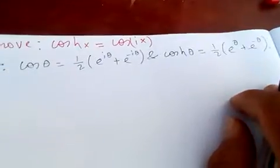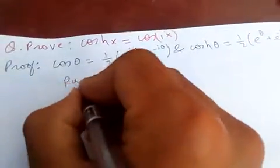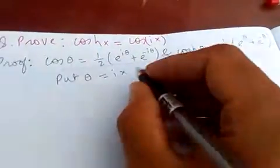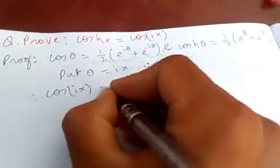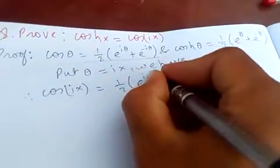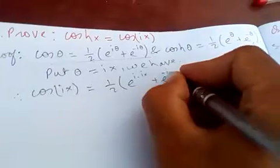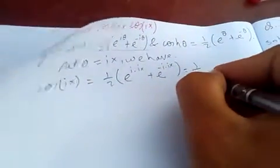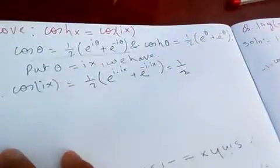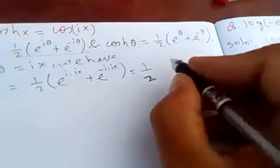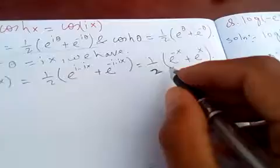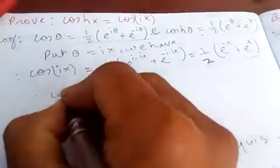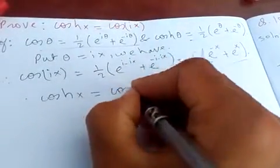Now put θ = ix in this equation. So we have cos(ix) = (1/2)(e^(i·ix) + e^(-i·ix)) = (1/2)(e^(-x) + e^x). This is the same as cosh(x), so cosh(x) = cos(ix).